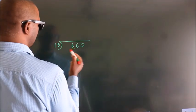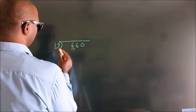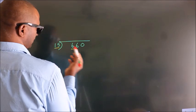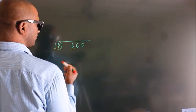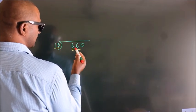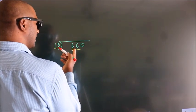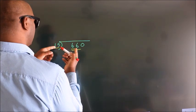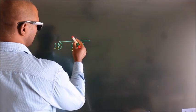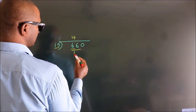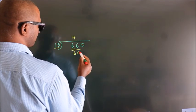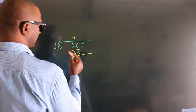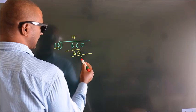Here we have 6, here 15. 6 is smaller than 15, so we should take two numbers: 66. A number close to 66 in the 15 times table is 15 fours are 60. Now we should subtract — we get 6.